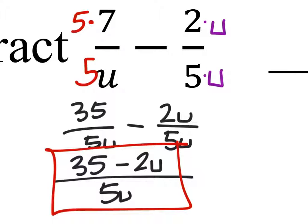You'd only use this method for adding and subtracting. If it's multiplication, you'd just multiply straight across and you would have, in this case, 14 over 5U.